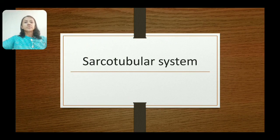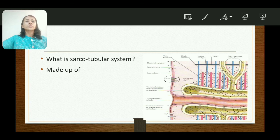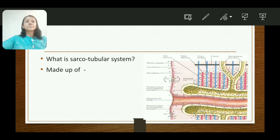Hello everyone, today we will discuss the sarco-tubular system. The sarco-tubular system is a highly specialized system of internal conduction of depolarization inside the muscle fiber. It is made up of transverse tubules — T-tubules — and the longitudinal sarcoplasmic reticulum.